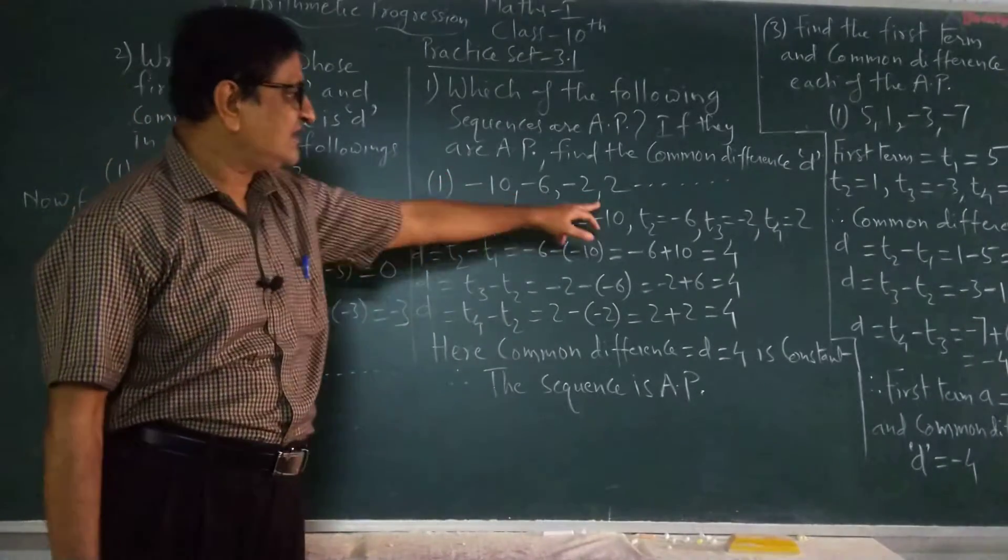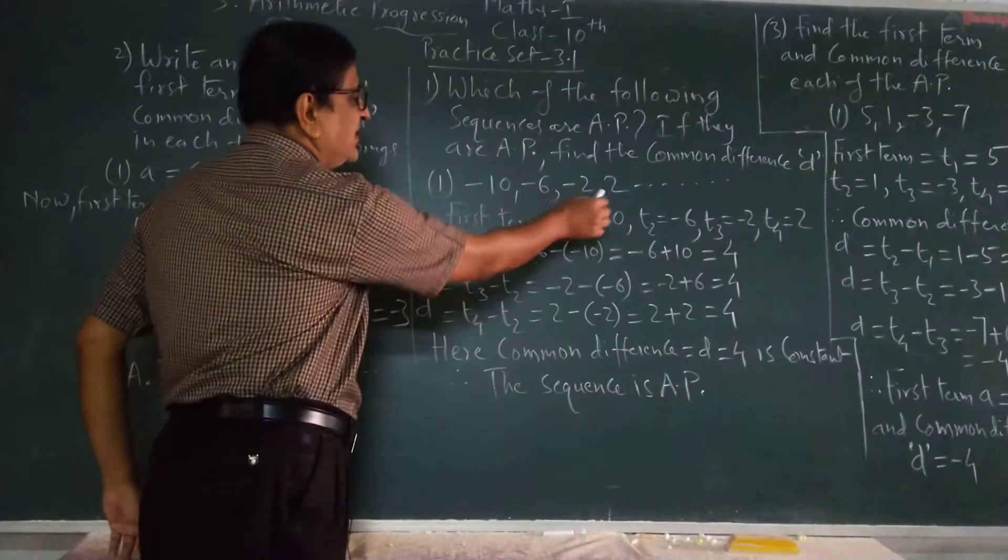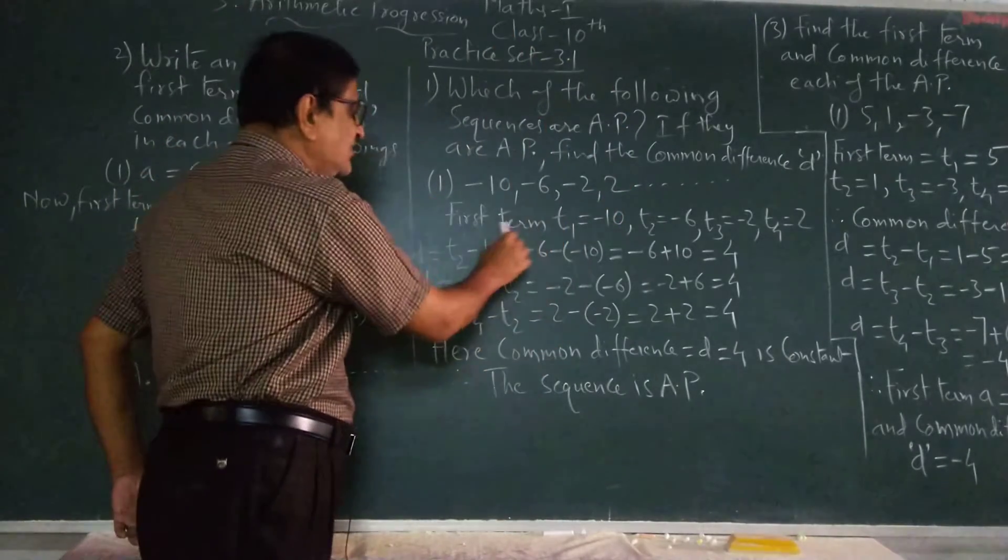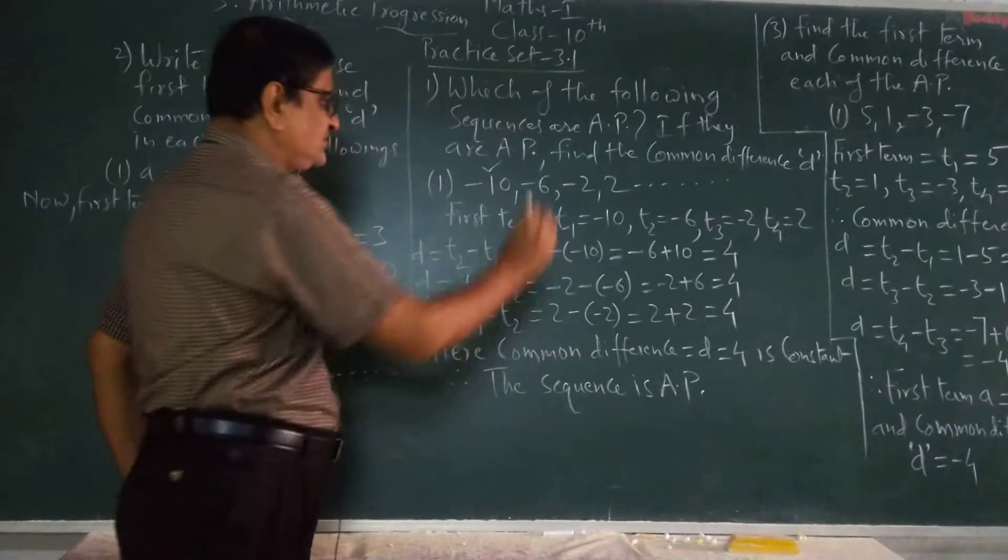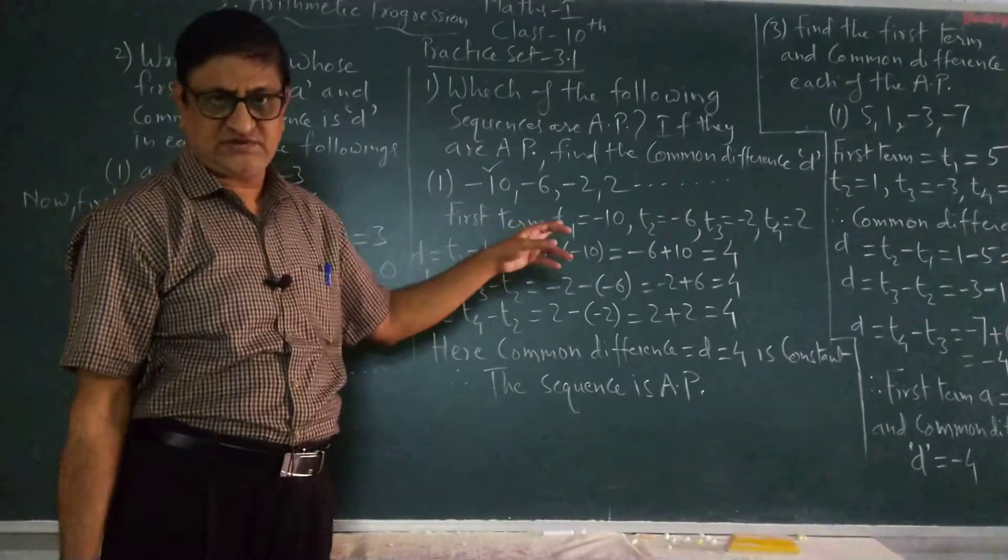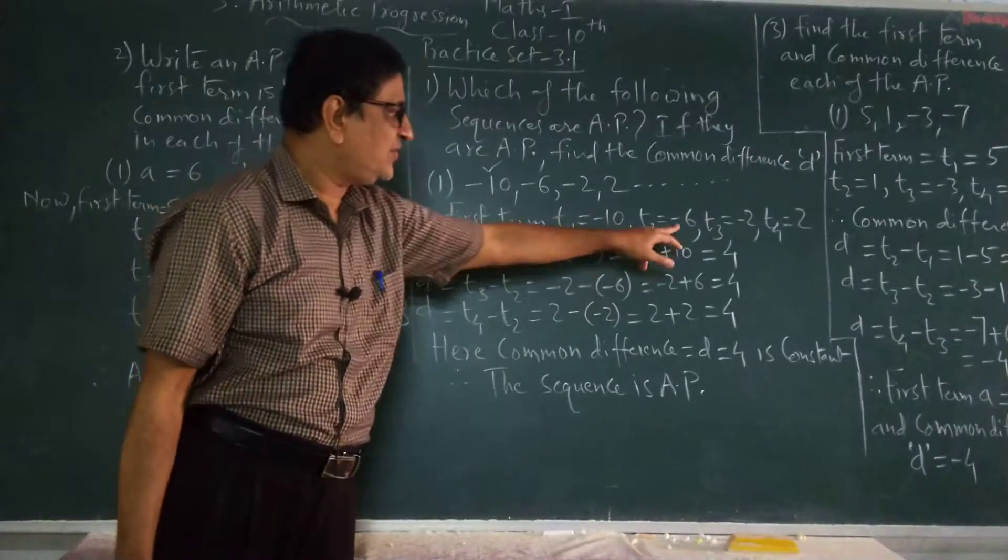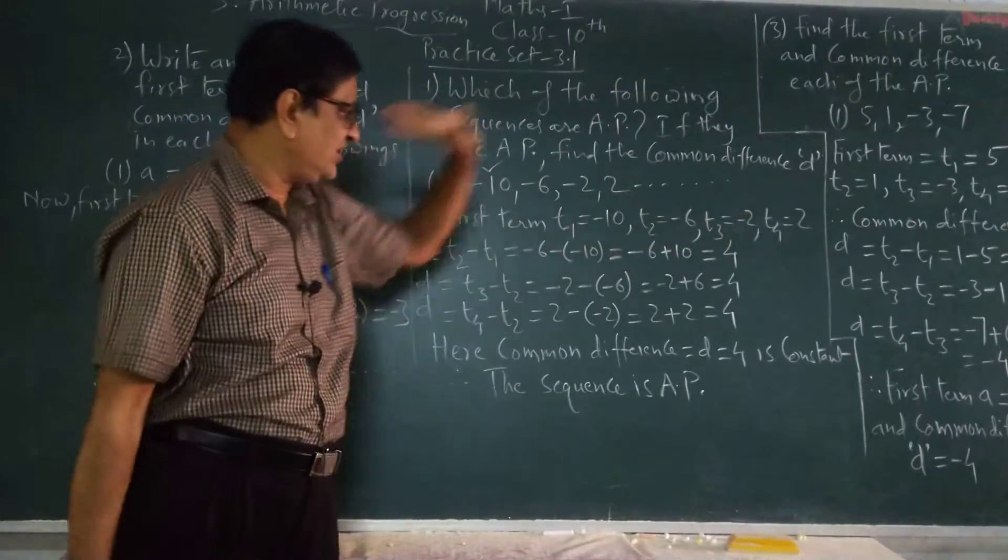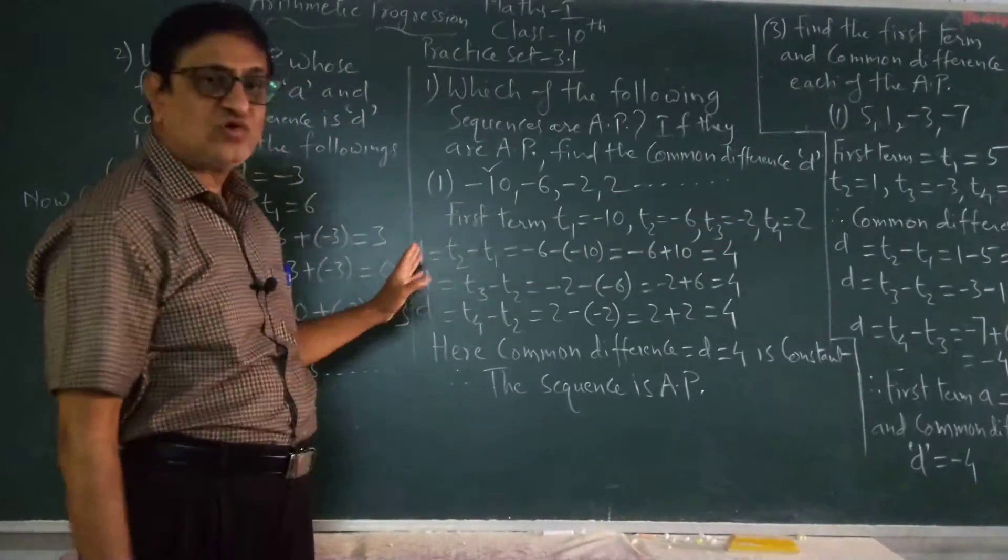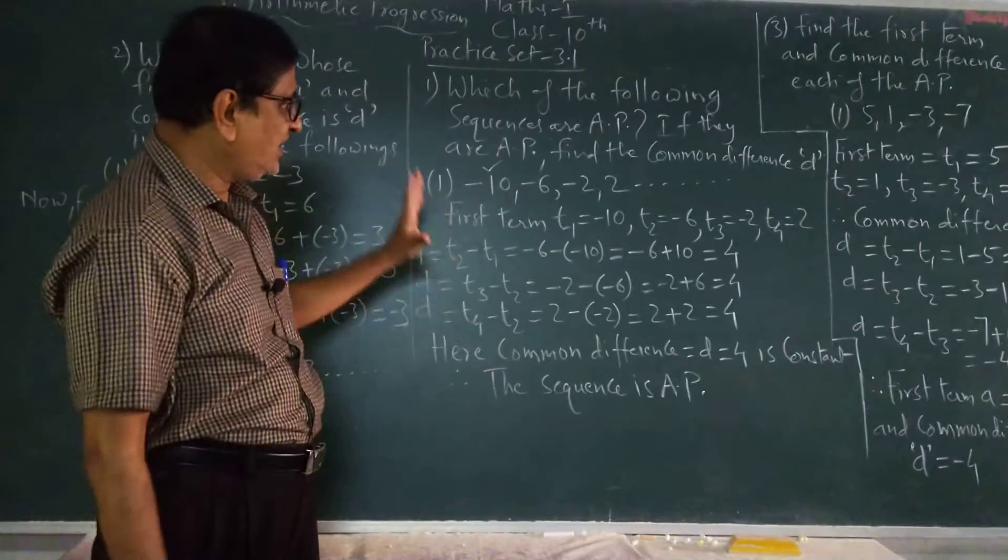The sequence is minus 10, minus 6, minus 2 and 2. Now the first term is T1, that is A, minus 10. T2, minus 6. T3, T4 and so on. Now the common difference is D.